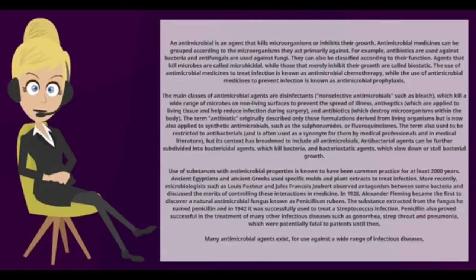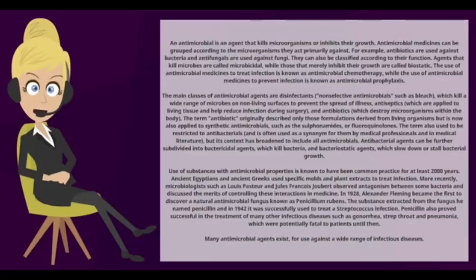In 1928, Alexander Fleming became the first to discover a natural antimicrobial fungus known as Penicillium rubens. The substance extracted from the fungus he named penicillin, and in 1942 it was successfully used to treat a streptococcus infection. Penicillin also proved successful in the treatment of many other infectious diseases such as gonorrhea, strep throat, and pneumonia, which were potentially fatal to patients until then.